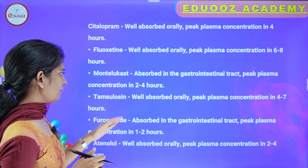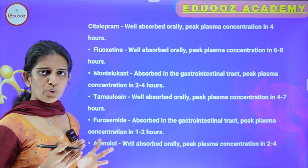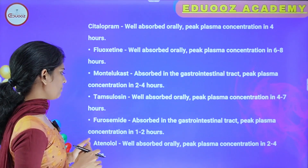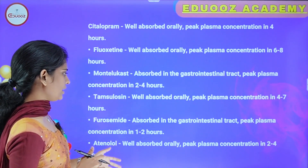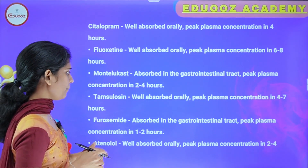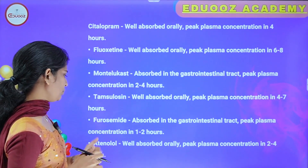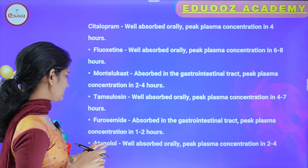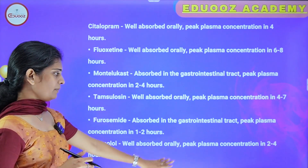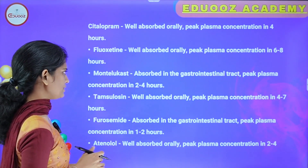The next drug is well absorbed orally with peak plasma concentration in 4 to 7 hours. Furosemide, a loop diuretic, is absorbed in the gastrointestinal tract with peak plasma concentration in 1 to 2 hours. Atenolol is absorbed orally with peak plasma concentration in 2 to 4 hours.